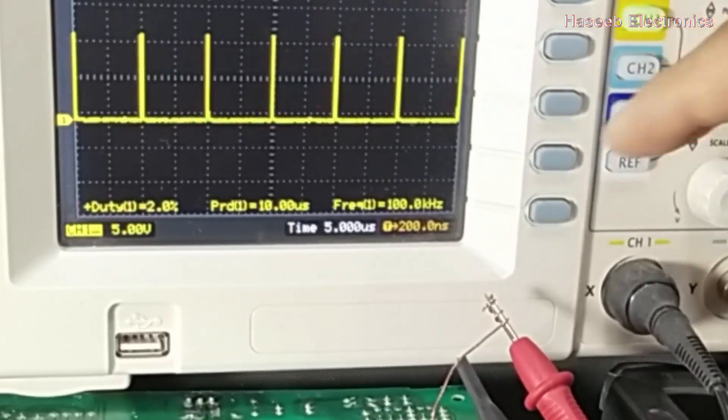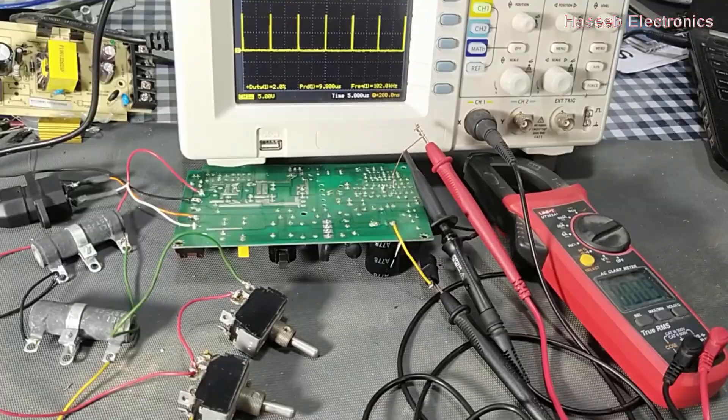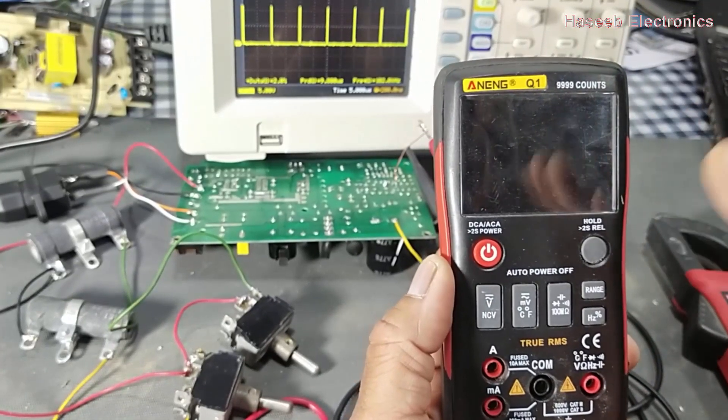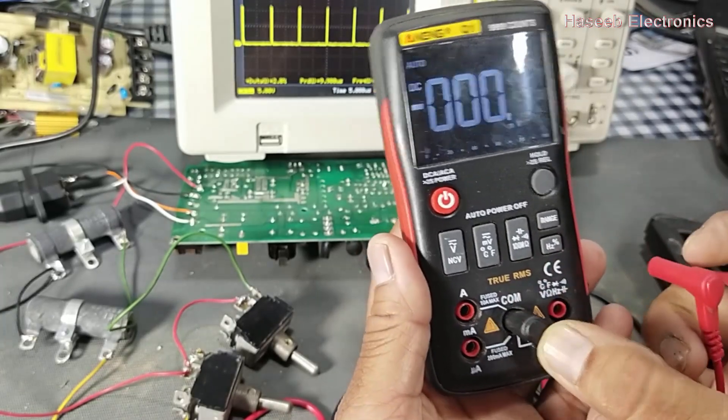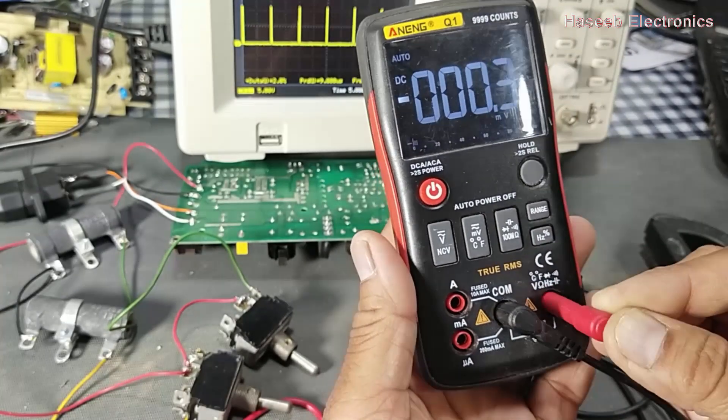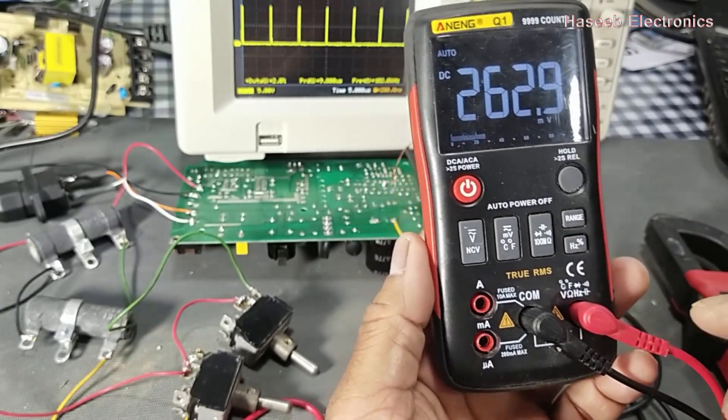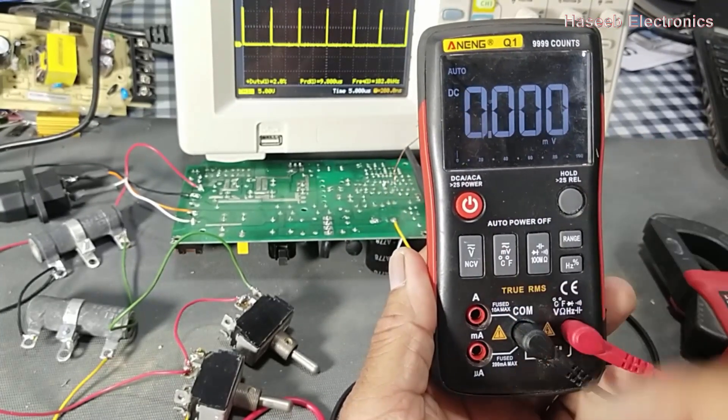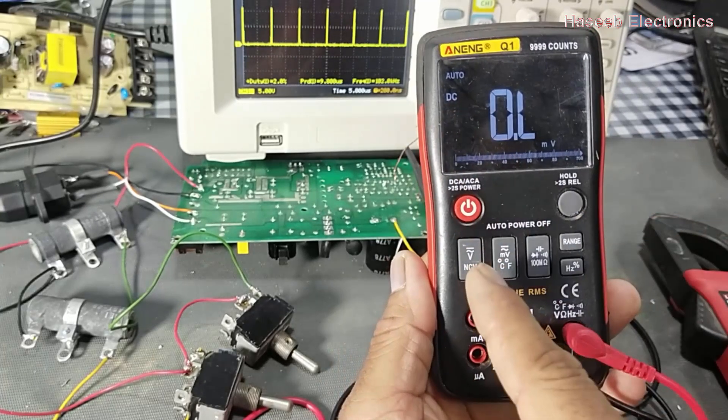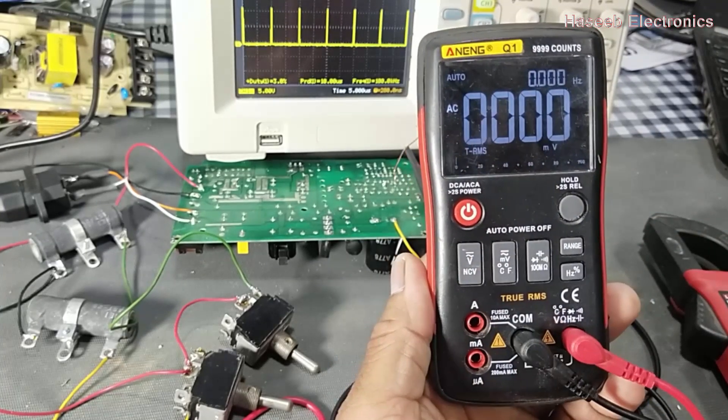Now if we want to use this multimeter, power it up. Black lead to common, red lead to the voltage socket. Press millivolt function - DC millivolt, another time AC millivolt.